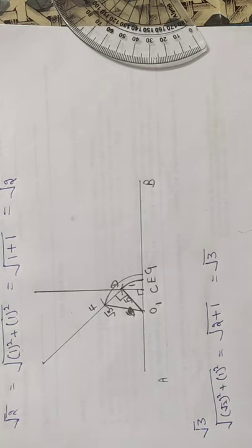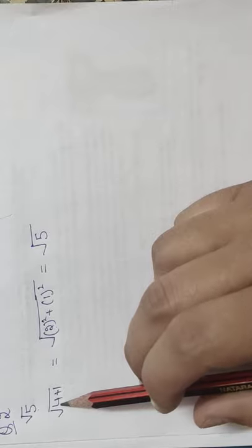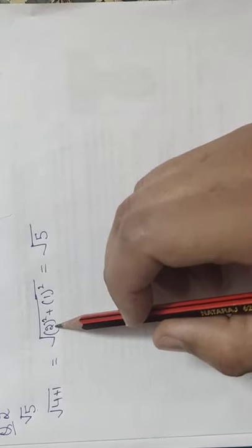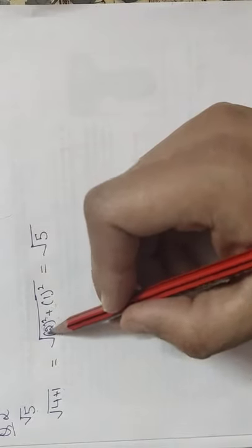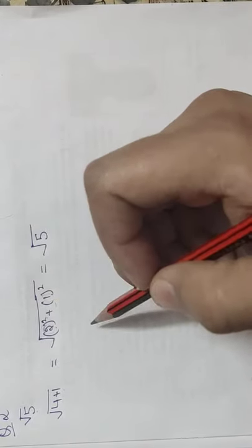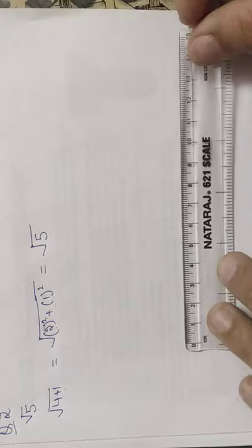Now Question 2: draw √5 on the number line. To draw √5, we write: 4 + 1 = 2² + 1² = 5, so √(2² + 1²) = √5. That means one side I will take 2 cm and the other side 1 cm, then join that line. After that I will open the compass according to the length of √5 and represent it on the number line.